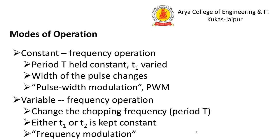Modes of operation: In constant frequency operation, the frequency is fixed but the pulse width (T1) changes using Pulse Width Modulation (PWM). In variable frequency operation, the chopping frequency and both T1 and T2 are varied. In constant frequency mode, T1 + T2 is always equal for all cycles, whereas in variable frequency mode, T1 + T2 varies.